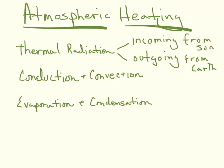We're talking about atmospheric heating, and there are three ways in which our atmosphere is heated, and they all have to do with the Earth. We can have what we call thermal radiation, conduction, convection, and evaporation and condensation. Let me talk a little bit about each one of these.